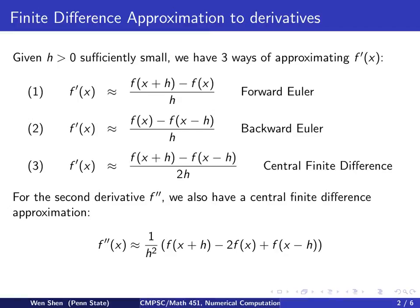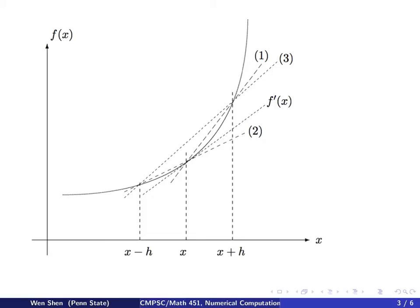Now we'll take a look at a geometric interpretation of the three methods for the first derivative. Assuming we have a function f — say some kind of convex function — and x is here, and I'm trying to compute the derivative at this point. The derivative is the slope of the tangent line that touches the graph at that point. For forward Euler, we take a step forward to x plus h, find the function value there, connect these two points into a secant line, and use its slope as an approximation.